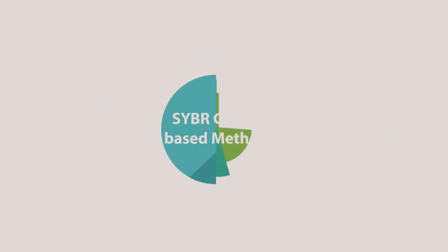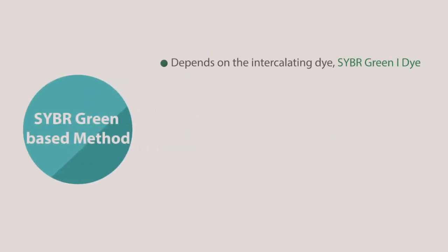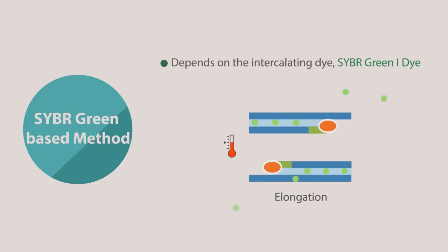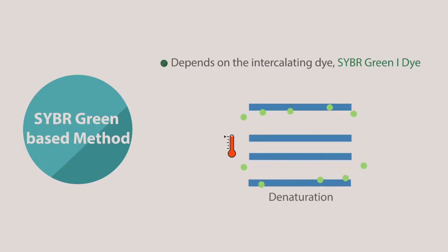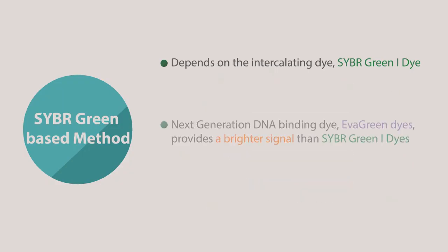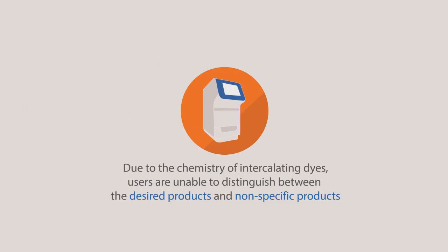One type of qPCR is the SYBR Green-based method, which depends on the intercalating dye SYBR Green 1. The SYBR Green dye emits a fluorescent signal that is detected by the thermal cycler when it binds to the double-stranded DNA. In the beginning of the next PCR cycle, the fluorescent signal is decreased when the double-stranded DNA is denatured. Therefore, the fluorescent signal of the sample is collected at the end of the elongation step of each PCR cycle. A next-generation DNA binding dye is the EvaGreen dye, which provides brighter signal than the SYBR Green 1 dye. Due to the chemistry of intercalating dyes, users are unable to distinguish between the desired products and non-specific products during the PCR cycling stage.